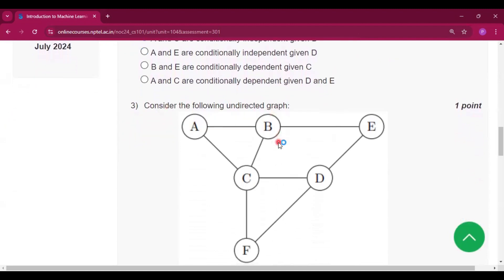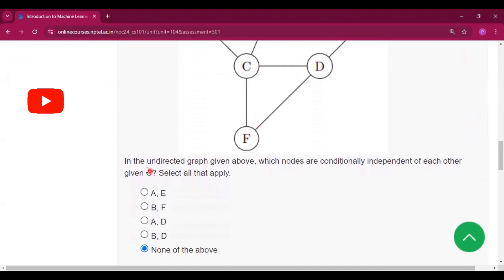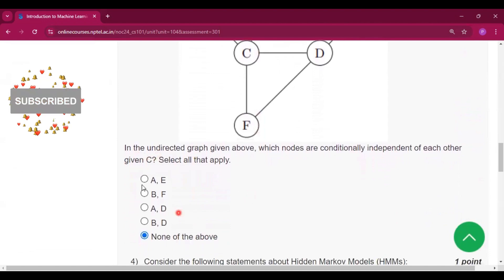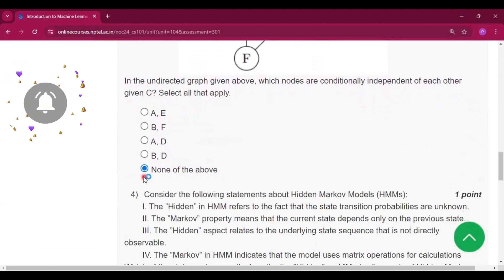Question number three: Consider the following undirected graph. Okay, the answer will be none of the above because all the answers will be correct. So none of the above will be the answer because it is not an MSQ type question.